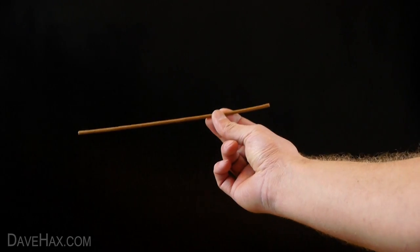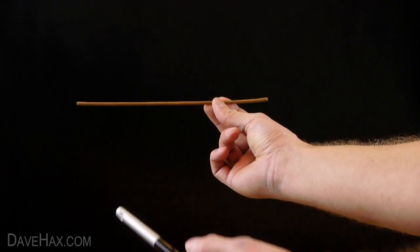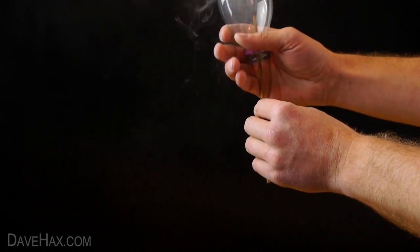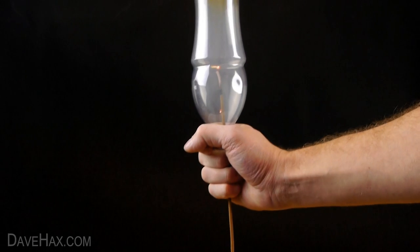To fill it up with smoke we're going to use an incense stick. Get it burning, blow it out and pop it inside the bottle to collect the smoke. Make sure it doesn't touch the plastic.